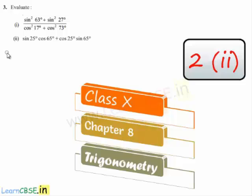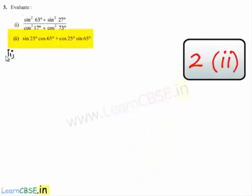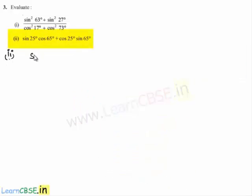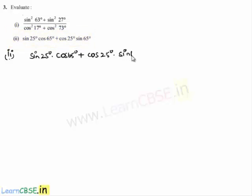Moving on to the solution for the second bit of the third problem. The given expression is sin 25 degrees into cos 65 degrees plus cos 25 degrees into sin 65 degrees. In this given expression, there are two terms: sin 25 degrees into cos 65 degrees, plus cos 25 degrees into sin 65 degrees.